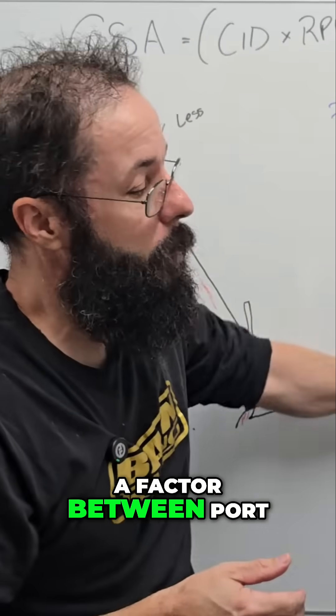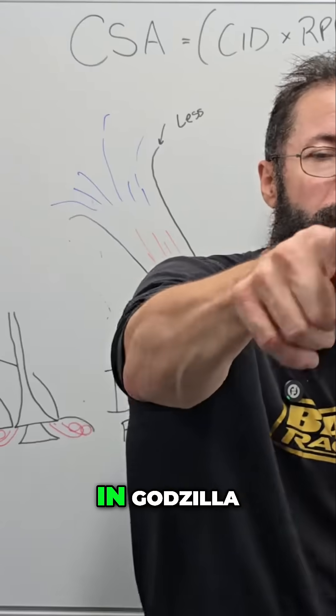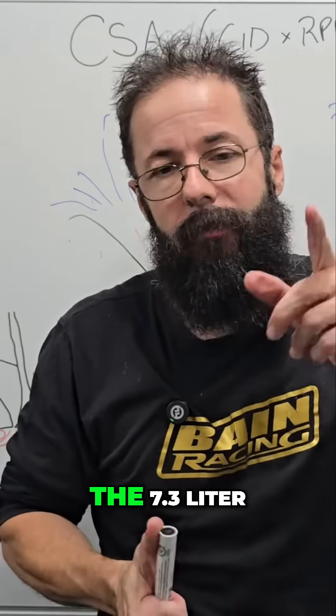So you'll see there's a factor between port height and how much swirl we can get away with. And Godzilla, I think that's the one, the 7.3 liter.